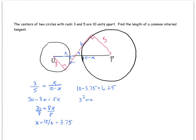So 3 squared plus a squared is x squared, so that's 3.75 squared, and a squared is 5.0625, so a is 2.25, which is the square root of that number.